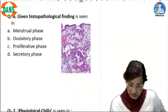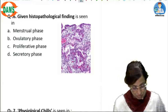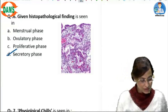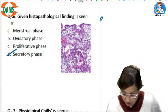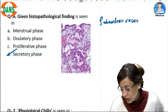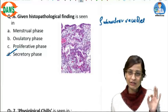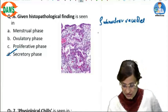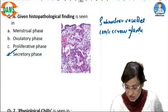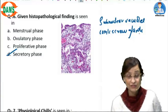The given histological finding is seen in the secretory phase. Classic features of the secretory phase include subnuclear vacuoles, which gradually move upward towards the apex of the cell. Then secretions are seen in the lumen. You can also see corkscrew glands — tortuous glands which are full of secretions, with secretions visible in the lumen of the gland.